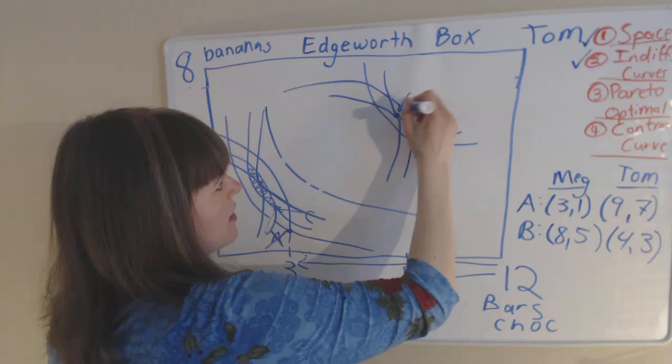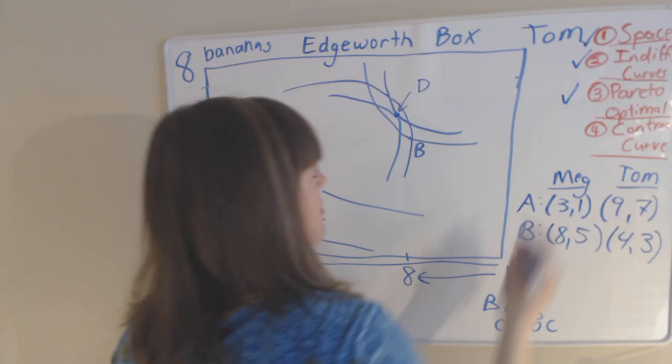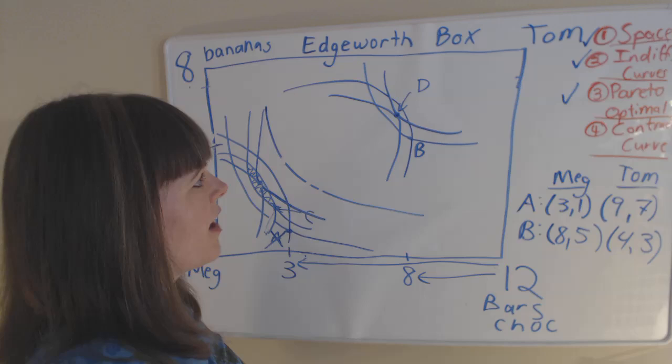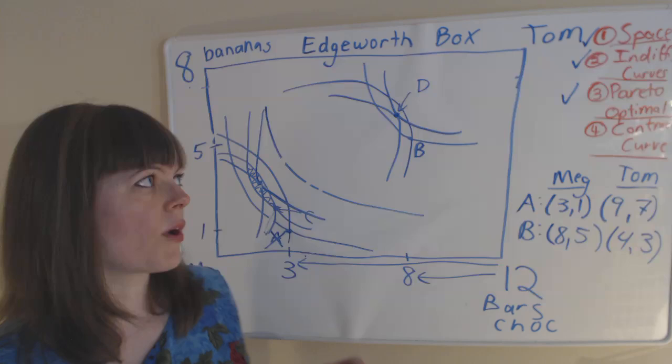So over here we have this point, we'll call it point D, that is Pareto optimal. And we've already noticed there's at least two Pareto optimal points on this map. So how many points in total on this map might be Pareto optimal? How many points could you find? Oh boy, that's a mess. Oh well, that's okay. You see the unmessy piece up there. So the question was, how many points on the map have tangent indifference curves for Tom and Meg? And the answer is that there's an infinite number of points.